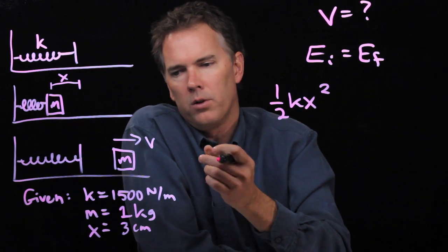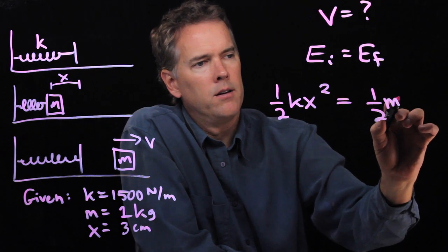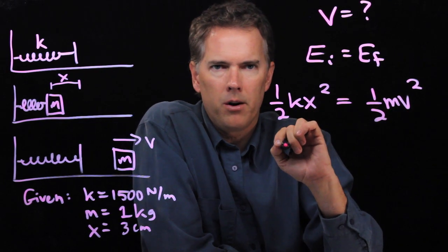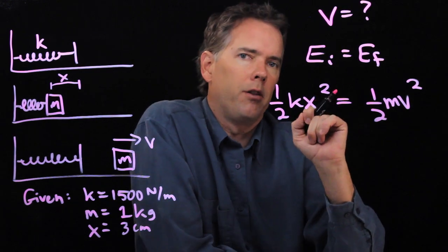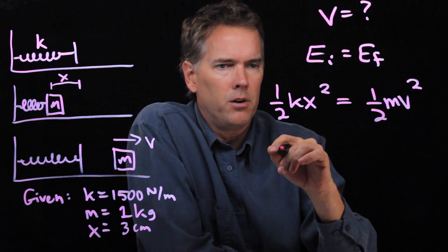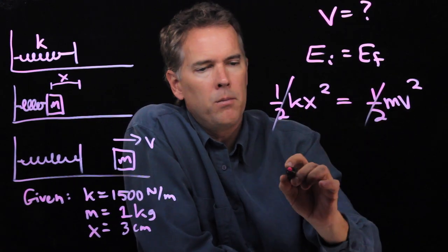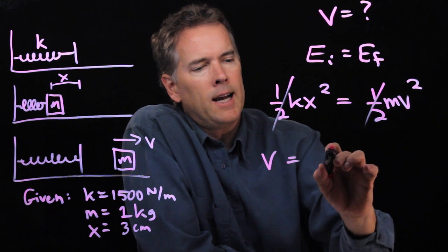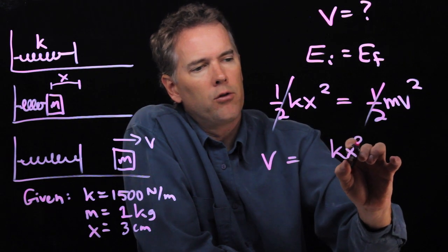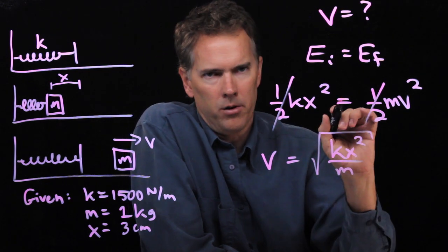When the spring releases, it goes back to its rest length, so there's no compression of the spring anymore. So the only energy is kinetic energy of the block, which is just 1/2 mv². And now we can solve this thing for V rather easily. Multiply both sides by 2, that gets rid of the half. I can divide by m, solve for V, I get kx² divided by m square rooted.